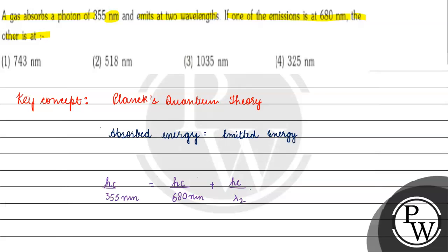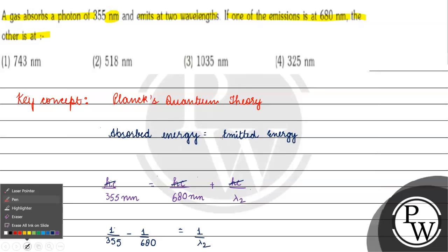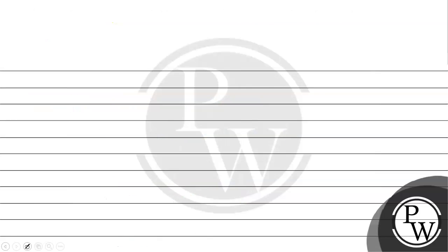Cancelling hc from both sides, we get 1/355 minus 1/680 equals 1/λ₂. Solving: (680 minus 355) divided by (680 × 355) equals 1/λ₂, which gives us 0.001346 equals 1/λ₂.